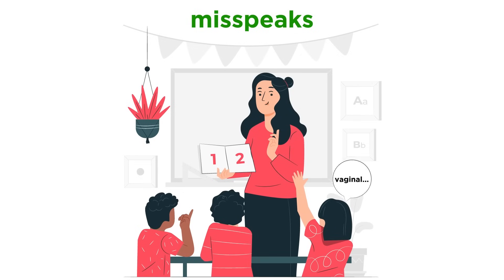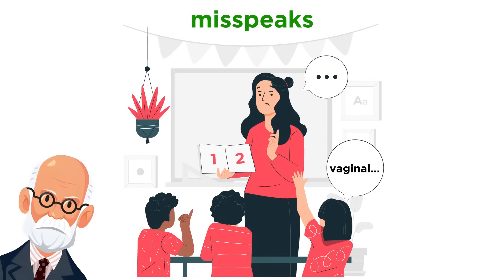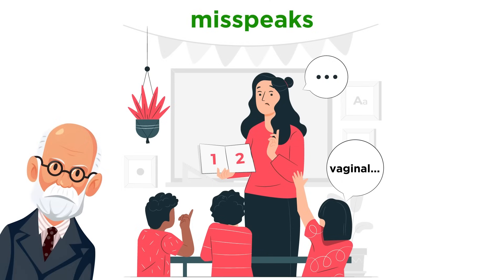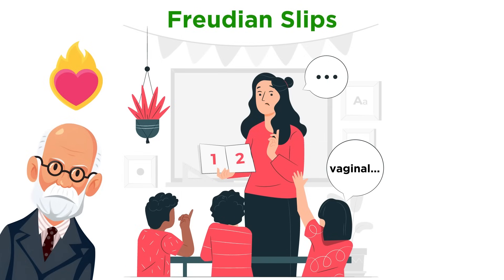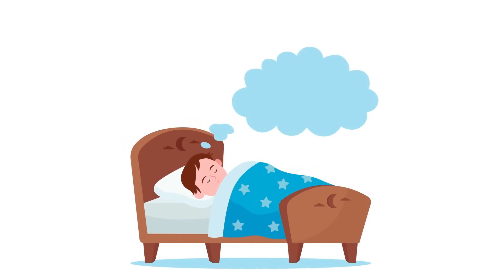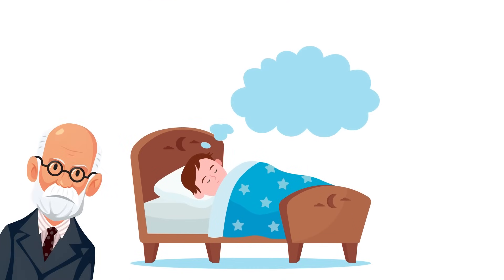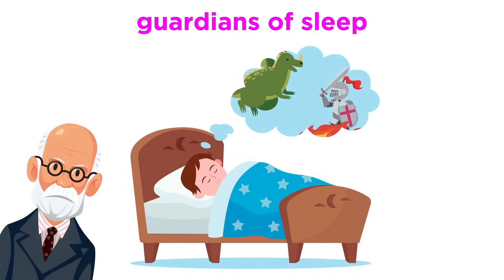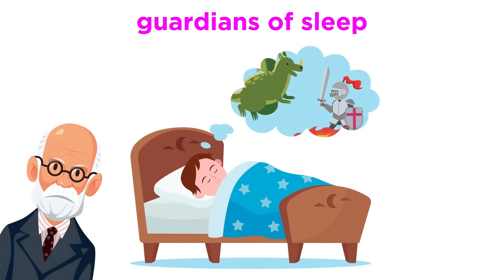You might say 'vaginal' instead of 'virginal' when reading aloud in class. Freud would say that this slip means you are repressing sexual thoughts, and this misspeak brings these thoughts to consciousness. We even refer to such errors as Freudian slips. Dreams also played an important role in Freud's theory. He believed that dreams were the guardians of sleep — a way for the mind to fulfill repressed wishes without waking the dreamer.